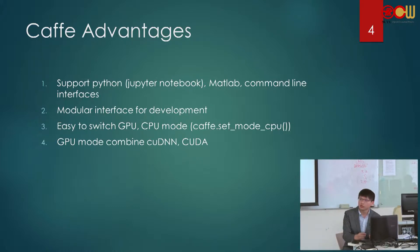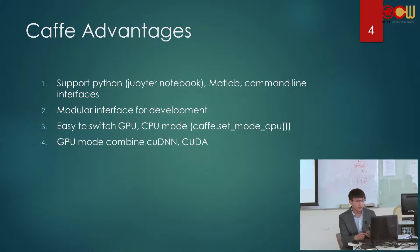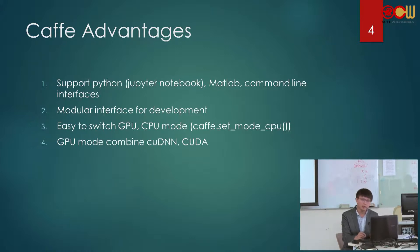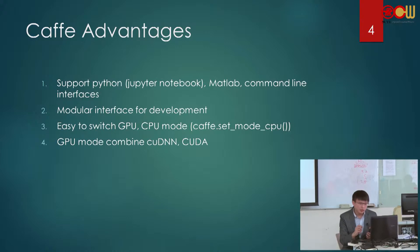If we want to change the deep learning network structure, like adding or removing some layers, we can modify the dot prototext files then reload Caffe, and it's done. The third point is Caffe makes it easy to switch between CPU and GPU. If my computer doesn't have a GPU, Caffe supports using a function called caffe.set_mode_cpu.